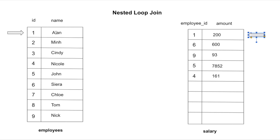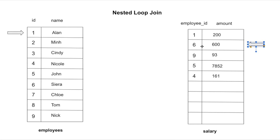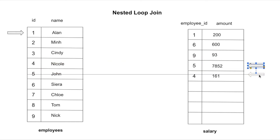First it checks the first row of the employees table with the first row of the salary table — this is a match because the id in the employees table equals the employee id column in the salary table, so it returns the matching result. Then it compares the first row of the employees table to the second row of the salary table — not a match because one does not equal six. Then it compares to the third row — again not a match. This repeats for the fourth and fifth rows.